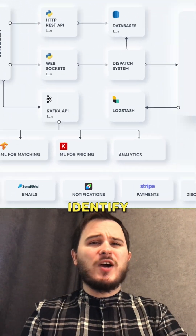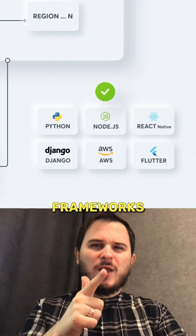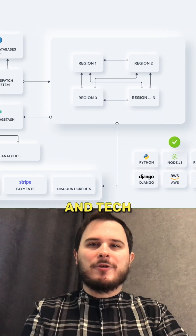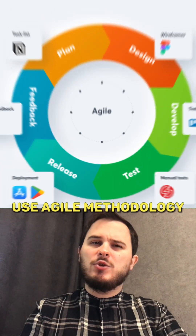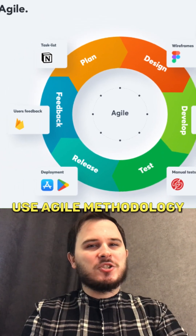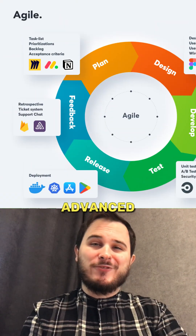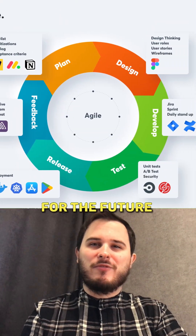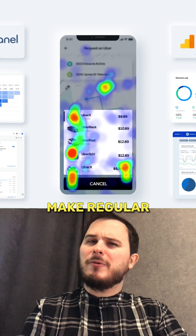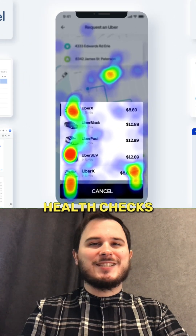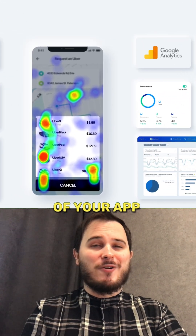Next, identify languages, frameworks, and tech architecture scheme. Use agile methodology with simple tools now, advanced only for the future. Make regular analytics and health checks of your app.